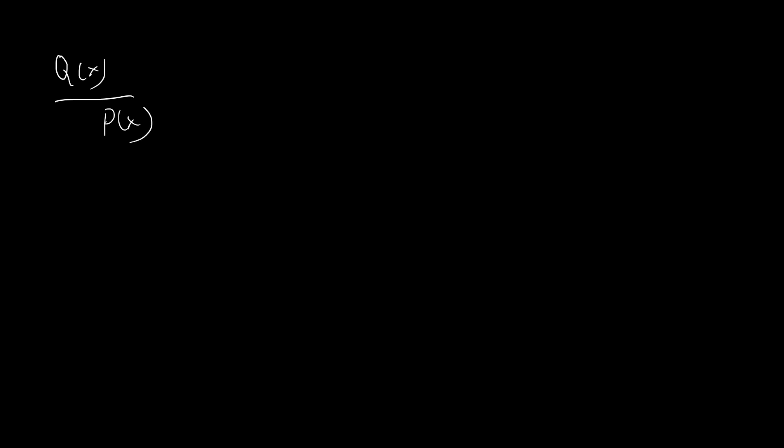The first thing I want to talk about is what's called the cover-up method. The cover-up method is a method to do partial fractions. So let's say you have a partial fraction decomposition with some q(x) on the top and p(x) on the bottom, and (x minus a) also on the bottom. When you do the partial fraction decomposition you're going to end up with A over (x minus a) plus B over (x minus b), etc. We just want a quick way to find the coefficient A of the (x minus a) term.